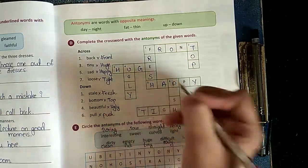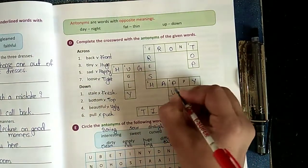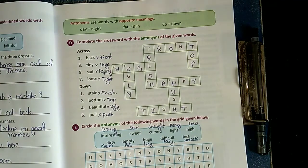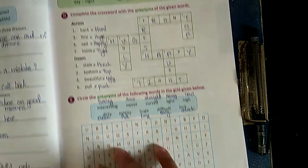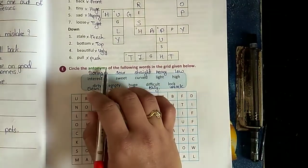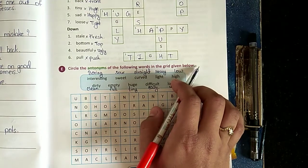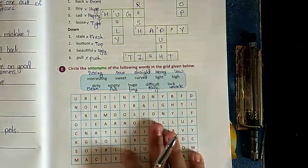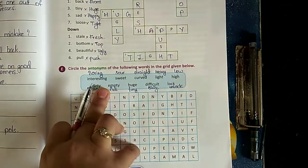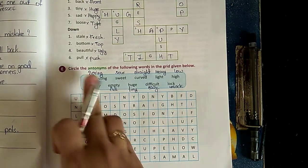Opposite of pull - it is push: P-U-S-H. Okay, so everyone understood the opposites? Let's do the next exercise. Circle the antonyms of the following words in the grid given below. You have to circle the antonyms. We have to circle the antonyms. The words given in the bracket - we have to find their opposites here.